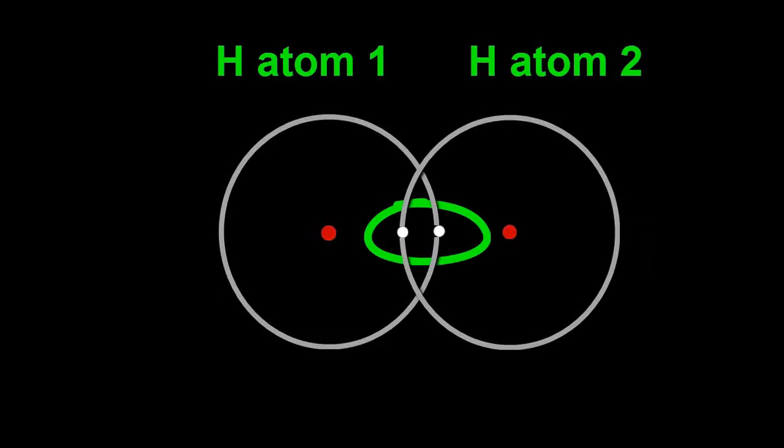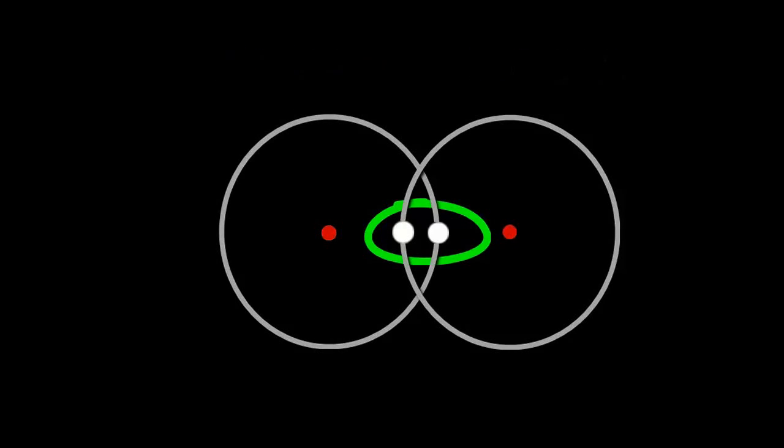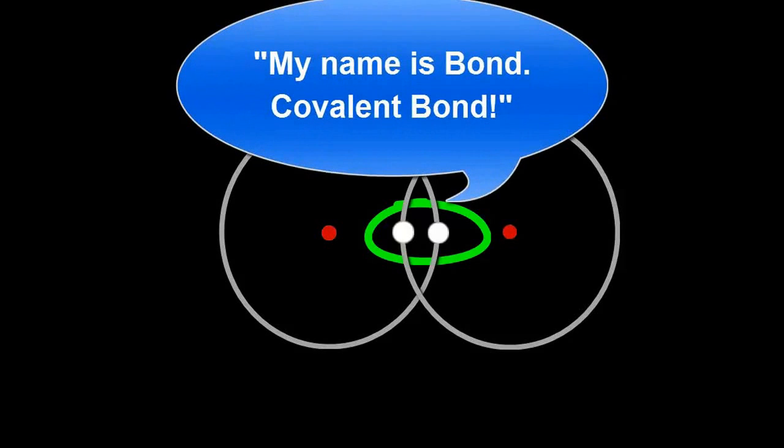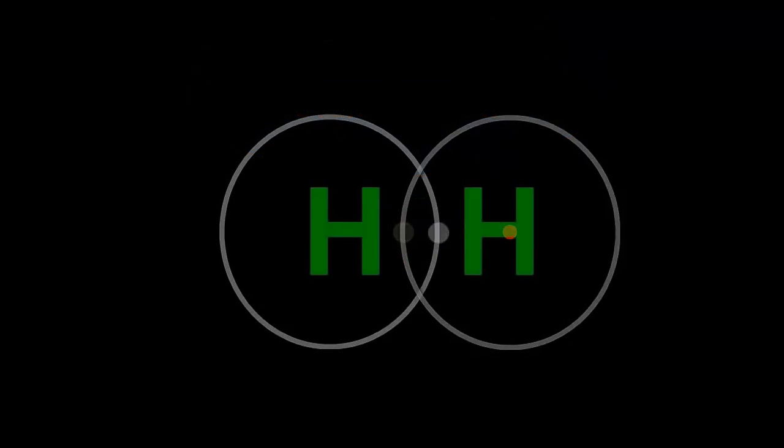Both electrons are then owned by both atoms. This electron sharing forms a covalent bond between the hydrogen atoms, so they then become an H2 molecule.